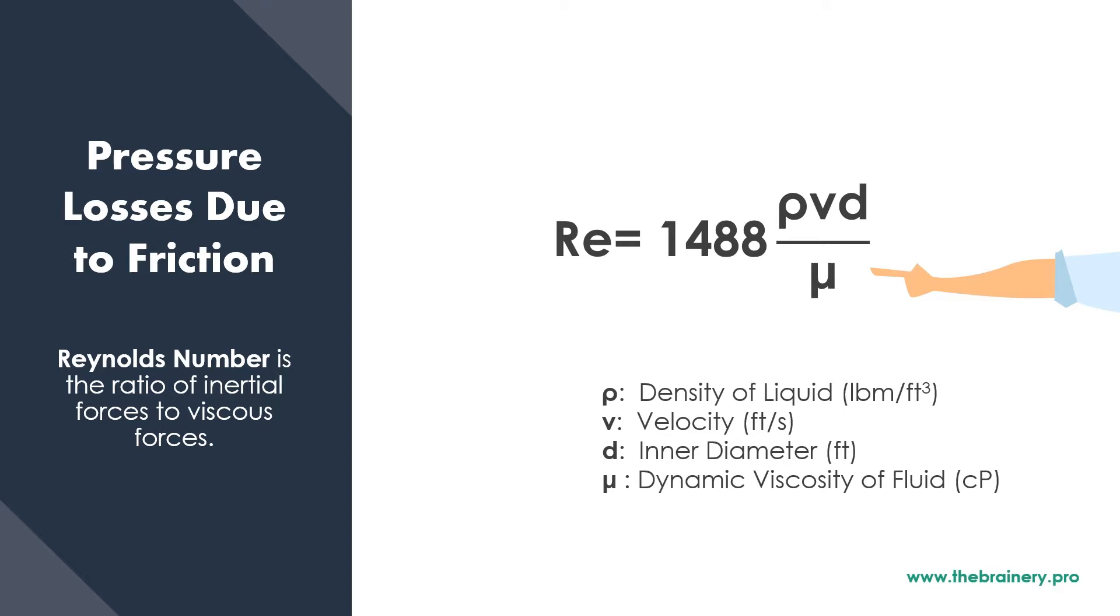When you have high viscosity liquid in a pipe, it's hard for it to get mixed and flow in different directions. And therefore it will tend to flow in a laminar fashion because it is not freely moving in different directions.